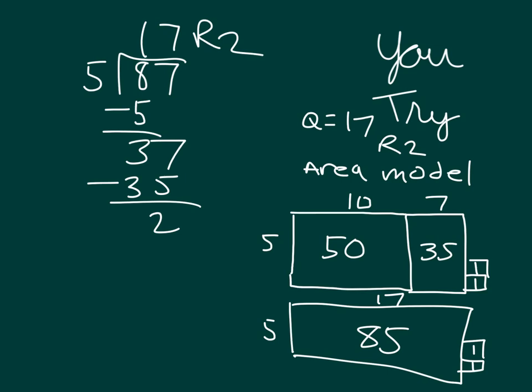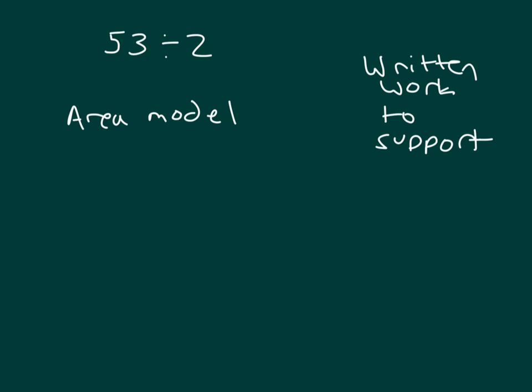So that unknown side length that we had solved for was 17, and our remainder and those square units that were left over was 2. Let me show you one more example where we're looking at 53 divided by 2, not only with an area model, but we'll also write out our work to show how it is that this is broken apart and to show that we have solved the problem correctly.